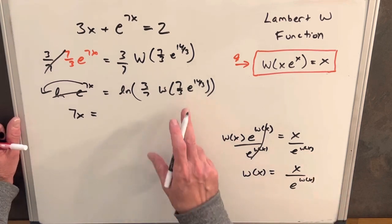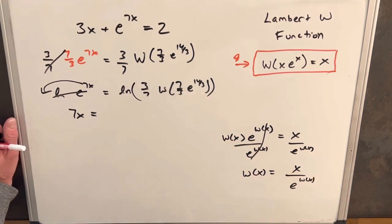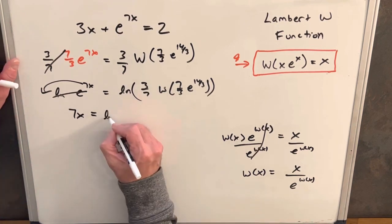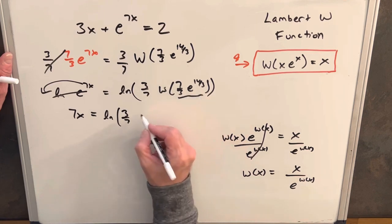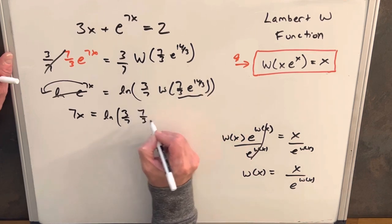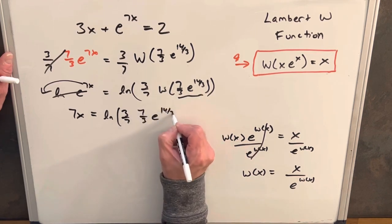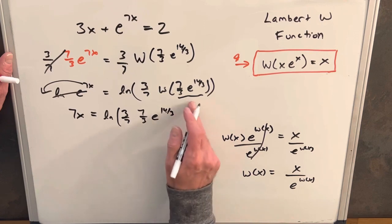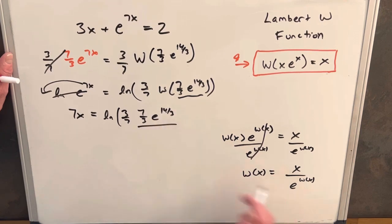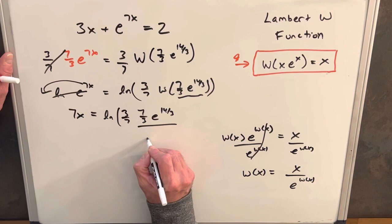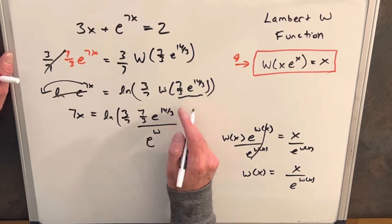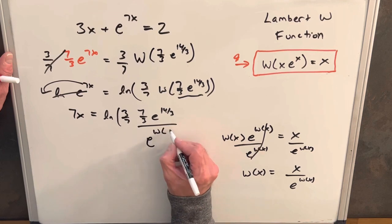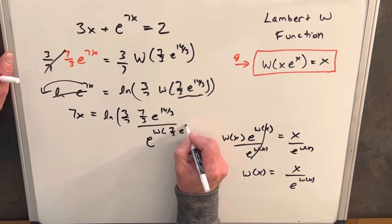And so what we'll do is we'll use that here to manipulate this. So we'll have ln 3 7ths. Our x value is just going to be this inside stuff. So it's going to be 7 thirds, e to the 14 thirds. And it's going to be all over our e value. We're going to have. And then in the denominator, we're going to have e to just this. Lambert W 7 thirds, e^(14/3).